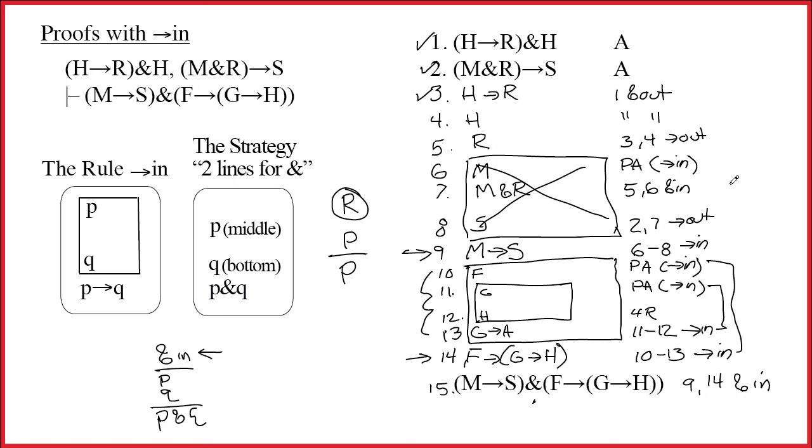So this is two lines for ampersand and arrow in. You put this rule and this strategy together, that's pretty powerful. It allows you to prove a lot of different things.